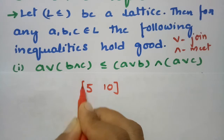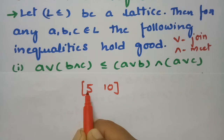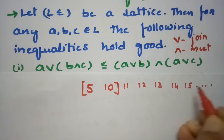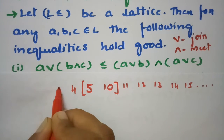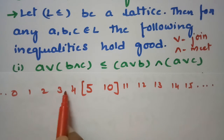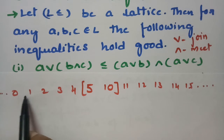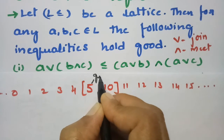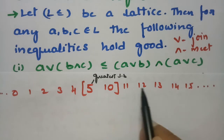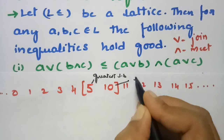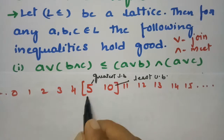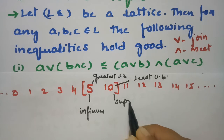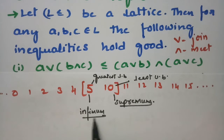To understand least upper bound: consider the set {5, 10}. Here 5 is a lower bound and 10 is an upper bound, while 11, 12, 13... are all upper bounds and 5, 3, 2, 1, 0... are all lower bounds. The greatest among all lower bounds is 5 — that is the greatest lower bound, also called the infimum. The least among all upper bounds is the least upper bound, called the supremum.